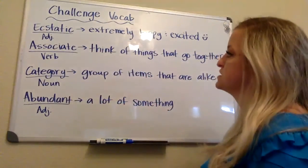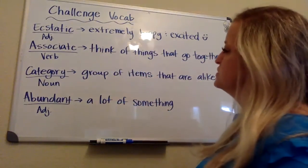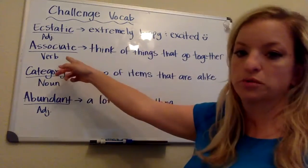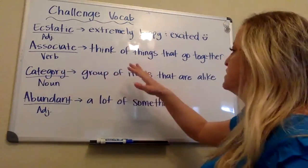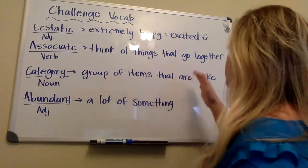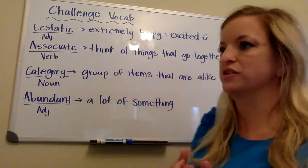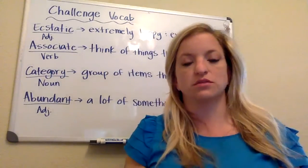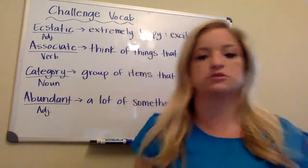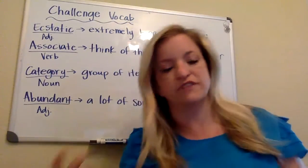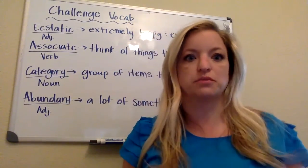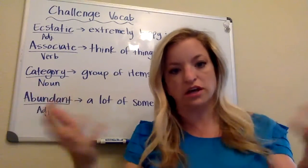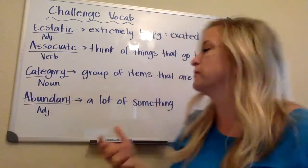The next one is associate. When we associate something, it's a verb — it's an action. It means that we're thinking of things that go together. So probably for Thanksgiving, you associate it with turkey and mashed potatoes and family. Another example would be peanut butter and jelly — you associate those things together.